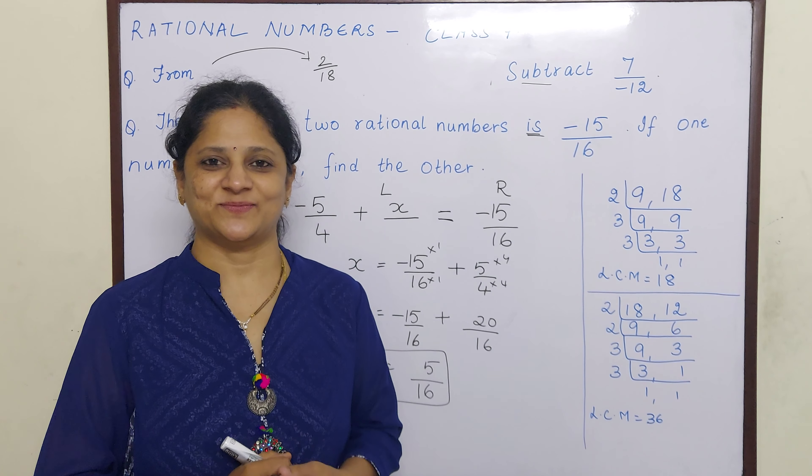So we have to take LCM; the LCM of 18 and 12 is 36. We have to convert them into equivalent fractions with denominator as 36. 18 twos are 36, so 2 twos are 4. 12 threes are 36, so 7 threes are 21. So if you add, it comes 25 by 36.